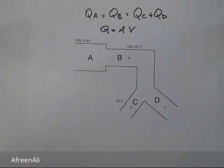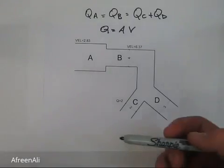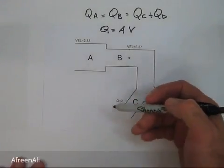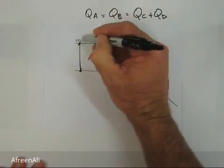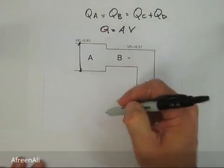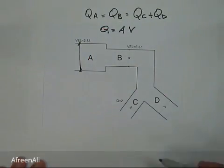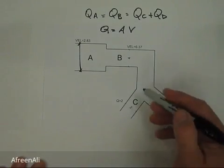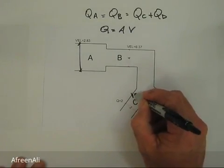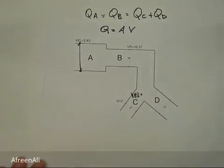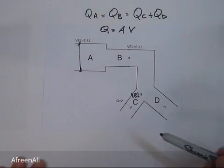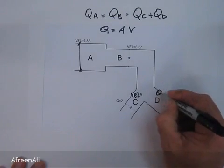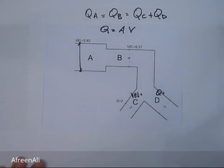Given this information in the diagram, we are asked to find: the diameter at A, the velocity at C, and the flow rate at D.